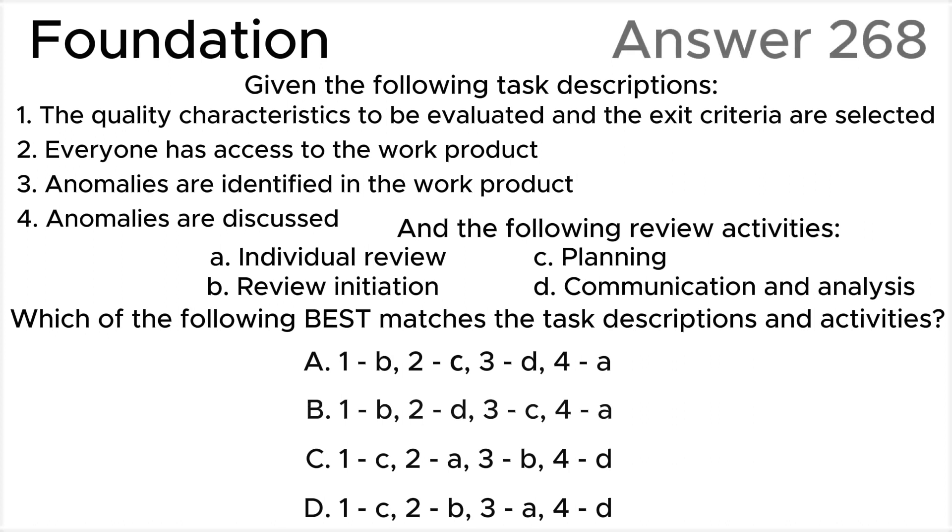Let's look at all the task descriptions from one to four according to ISTQB syllabus. Task 1: The quality characteristics to be evaluated and the exit criteria are selected corresponds to review activity C, Planning. During the planning, reviewers define the review scope, purpose, work product to be reviewed, quality characteristics to be evaluated, areas of focus, exit criteria, supporting information such as standards, effort, and time frames.